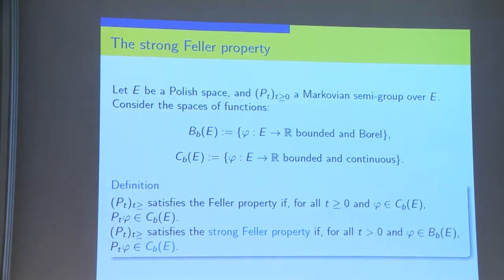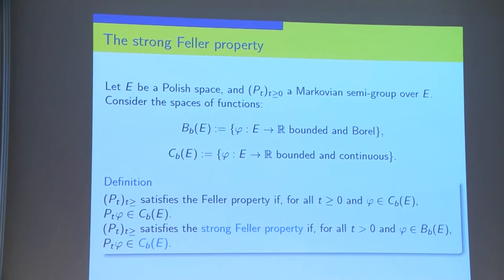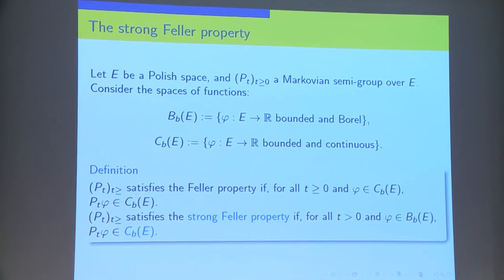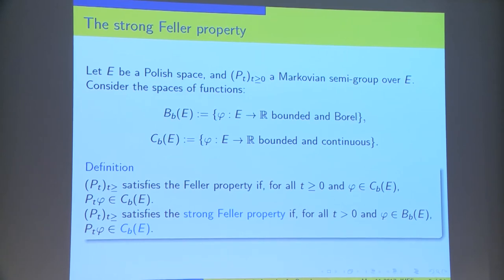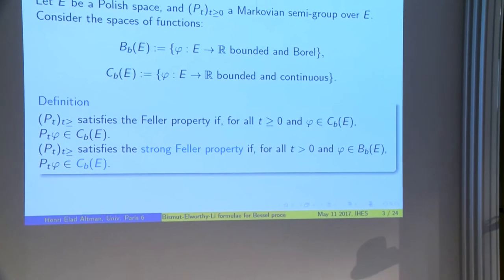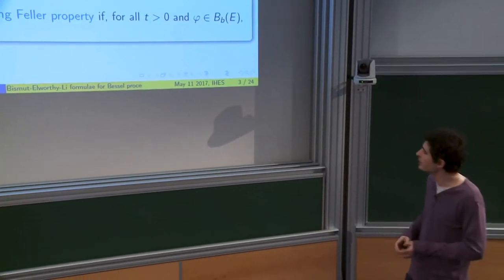The semi-group P_T is said to have the Feller property if for all T and all φ which is continuous, P_T of φ will also be continuous unbounded. This is a property which holds in very general cases. But the property that I will be interested in here is the Strong-Feller property, which says that P_T of φ will be continuous for any φ which is only Borel. It is Strong-Feller if the semi-group creates continuity in positive time.